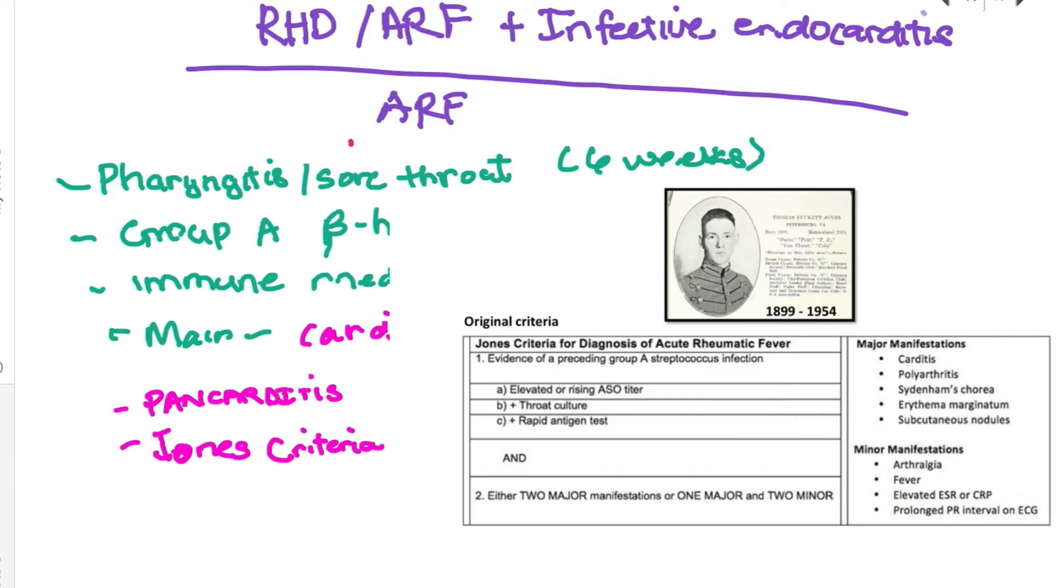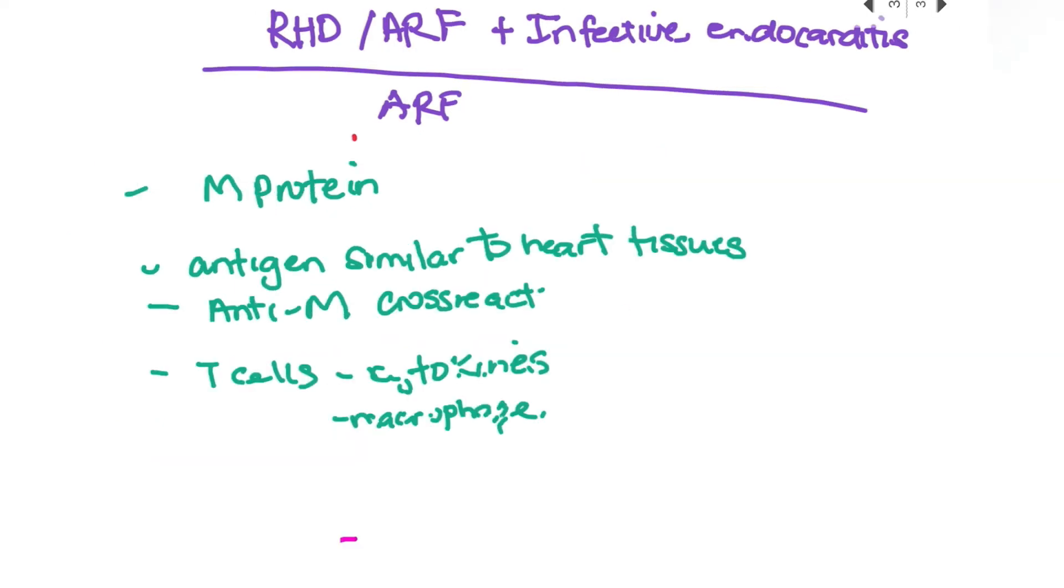Let's move on to the pathogenesis of this disease. The Group A streptococcus organism causes a preceding pharyngitis. This Group A strep has a surface protein called M protein, and this antigen is similar to the heart tissues which also have M protein.